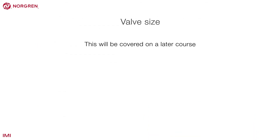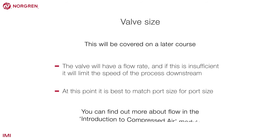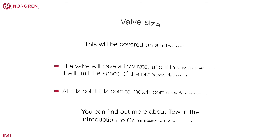The size of the valve needed will be covered on a later course, but it's an important consideration. The valve will have a flow rate, and if this is insufficient it will limit the speed of the process downstream. At this point it is best to match port size for port size. You can find out more about flow in the introduction to compressed air module.